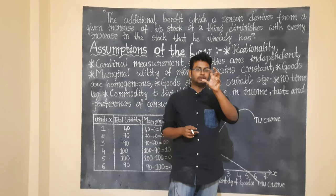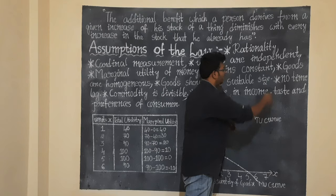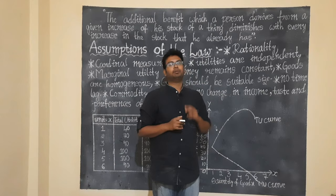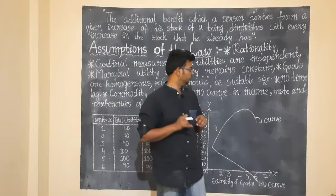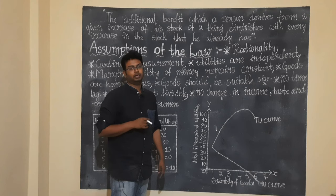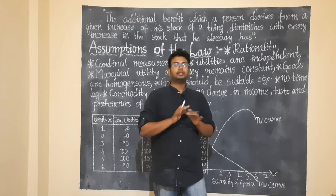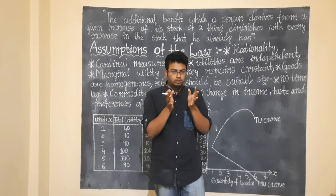Goods should also be of suitable size — each unit must be reasonably sized. Next: no time lag — the consumption of each unit should happen continuously without a gap in time. Next: the commodity is divisible. Finally: no change in income, taste, and preferences of the consumer. The consumer's income, taste, and preferences should remain constant throughout.